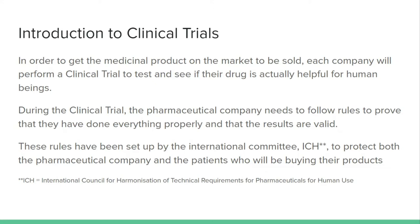In order to get a drug — a medicinal product — on the market to be sold, each company will perform a clinical trial to test and see if their drug is actually helpful. There are whole stages of that, as we've discussed previously. You're testing safety in addition to whether it actually has a benefit. Even if your drug is super safe, that's not enough to get FDA approval — it needs to actually produce a benefit for them to allow you to sell it.